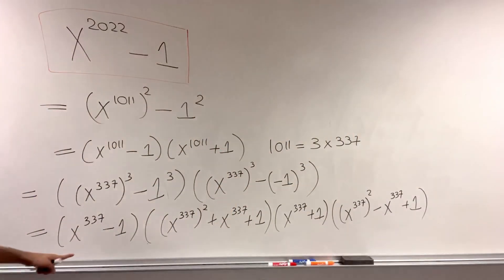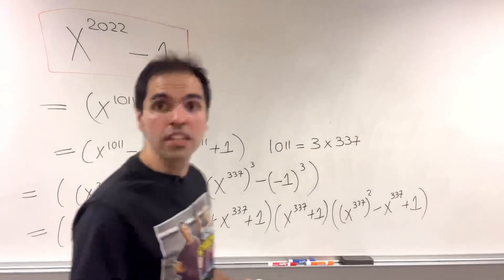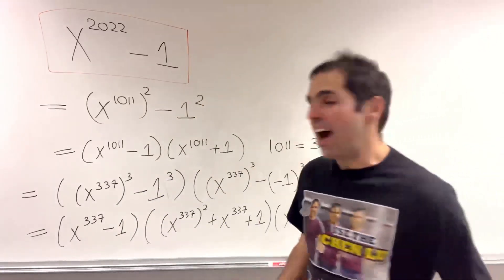However, we can do even better than that because this is just of the form a to the n minus b to the n, which we can factor out even further.